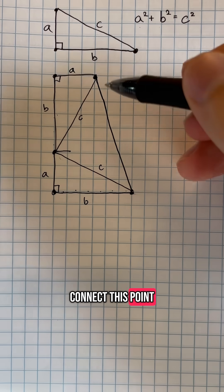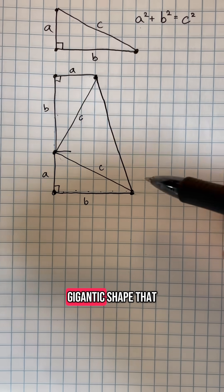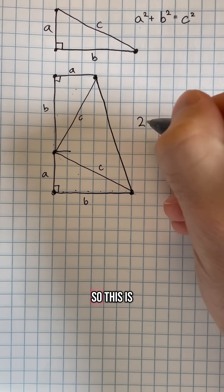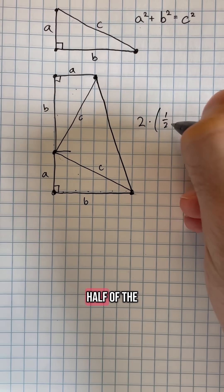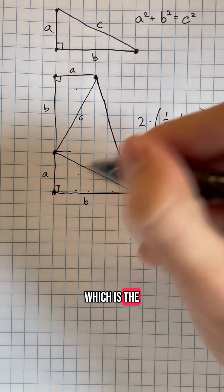Let us now connect this point and this point here and ask what is the area of this gigantic shape that we have. Well, we have two copies of our original triangle here. So this is two times one half of the base of the triangle, b, times a, which is the height of the triangle,